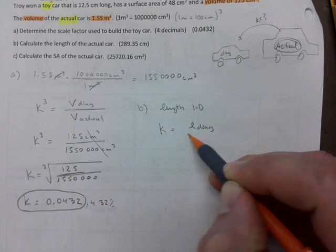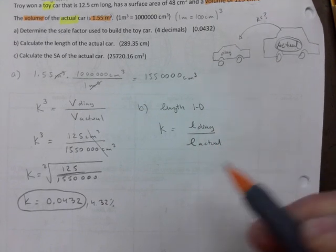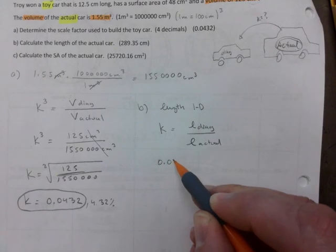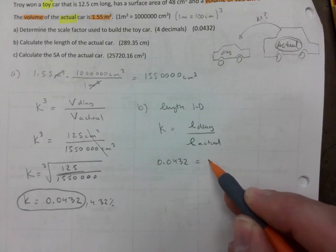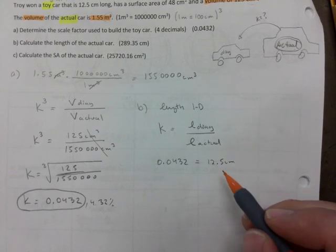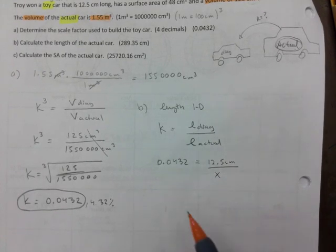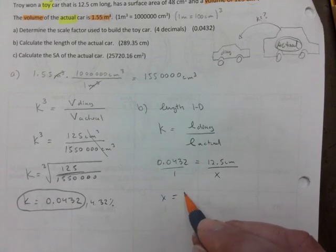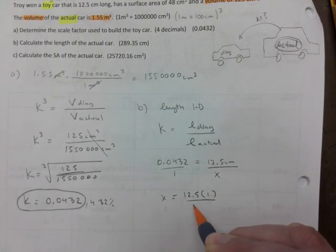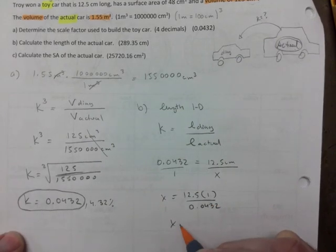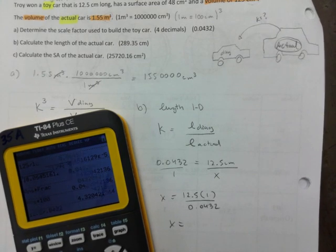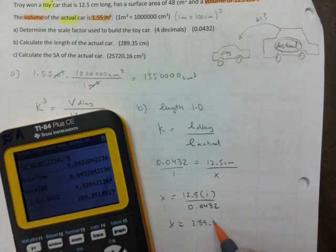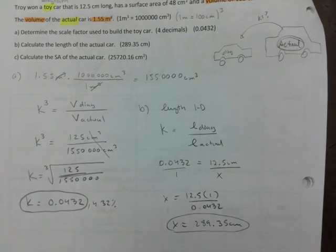I'm going to use that number, 0.0432, and length of diagram I know is 12.5 cm. I'm going to figure out the length of the actual. You can put a one there, and then it's 12.5 times one divided by 0.0432, and that should give me the answer that is in brackets, 289.35 cm.